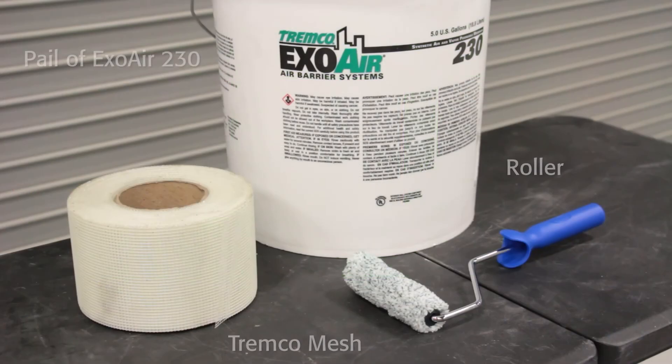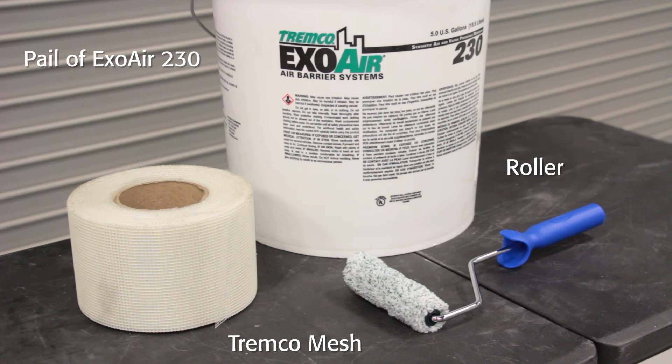For the ExoAir 230 and Mesh, you will need a pail of the ExoAir 230 membrane, a roller, and a roll of the Tremco Mesh.